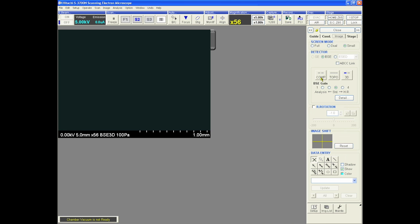VPSC gain changes the electronic amplifier for the signal. 2 or 3 is normal for low magnification, and 4 is used for high magnification.